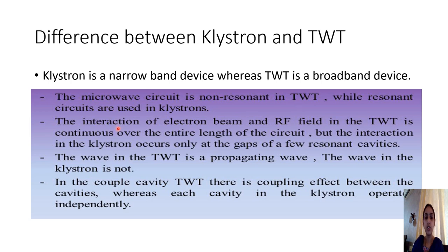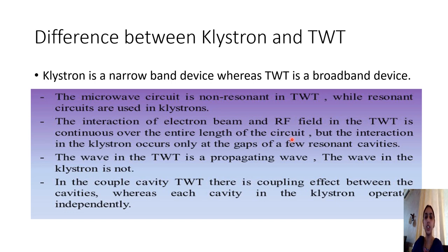In the klystron, the interaction of the electron beam and RF field occurs only at the cavity grids — only for very few gaps of resonant cavities. But in the traveling wave tube, the interaction between the electron beam and RF field is continuous over the entire length of the circuit. The TWT is a tube type in which this interaction takes place continuously over the entire length of the tube.